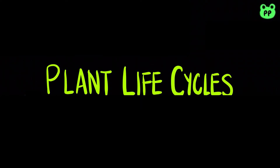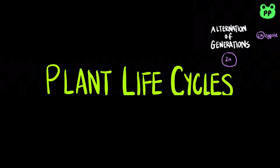All plants' life cycle involves alternation of generations. First, a diploid cycle develops into a multicellular diploid sporophyte through mitosis.